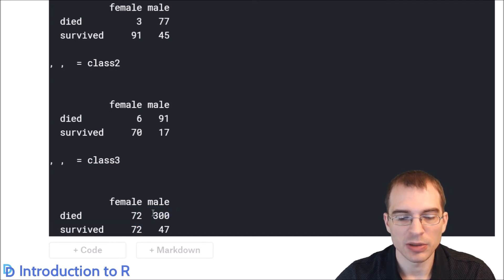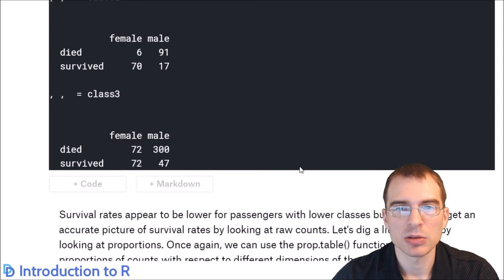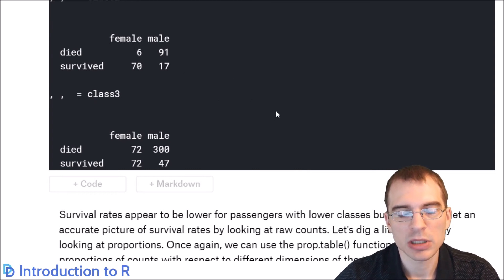And for the males, in third class, you were pretty likely not to make it, but if you went all the way to first class, you were still more likely than not to pass away, but it wasn't nearly as stacked against you as it was if you were only in third class. So again, we can use the prop.table function to look at proportions, even for a three-way table like this.